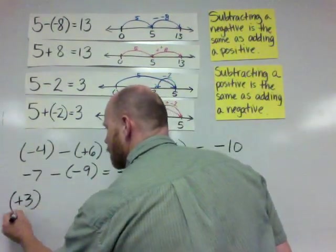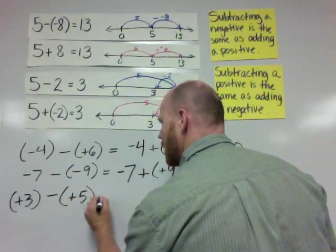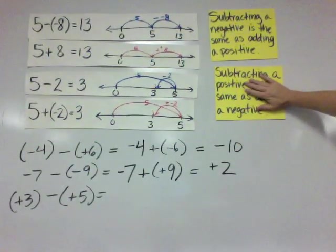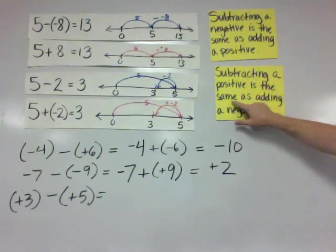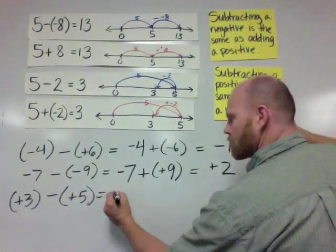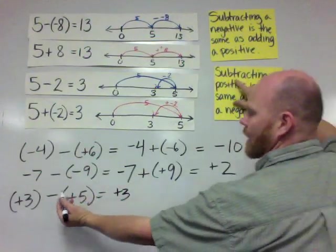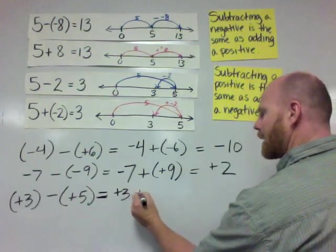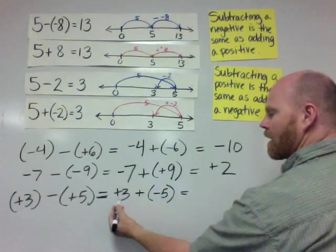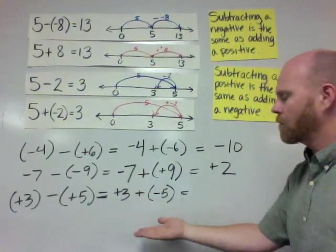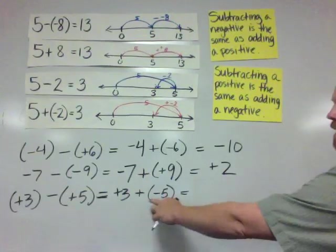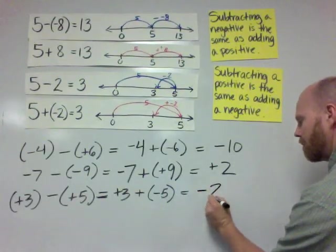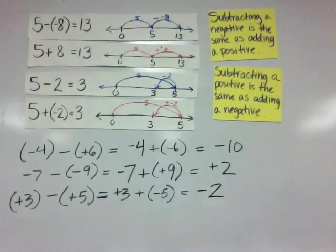Down here we've got positive 3 minus positive 5. We are subtracting a positive, and subtracting a positive is the same as adding a negative. So now we have positive 3 plus negative 5. Positive 3 is a hop of 3 units to the right, and adding negative 5 is a hop of 5 units to the left, resulting in an answer of negative 2.